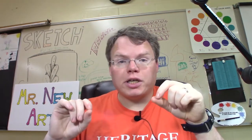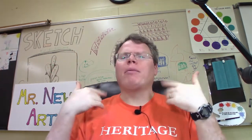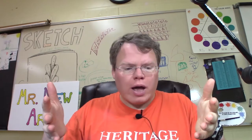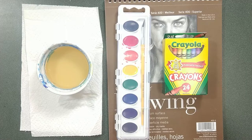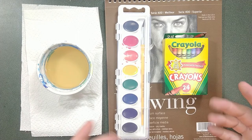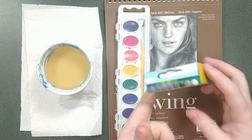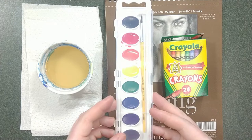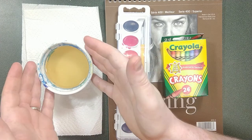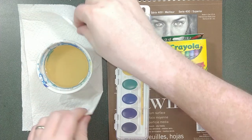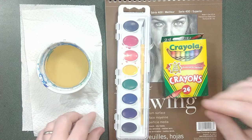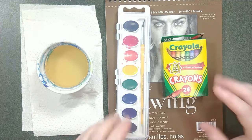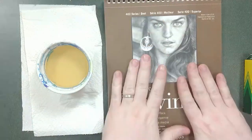You might have looked at those pictures and thought, 'How am I supposed to do that?' I'm about to show you how we paint that. Here are the materials we're going to need: crayons — specifically the black crayon — watercolor paints, a cup of water, a paper towel to dry things off, and some kind of paper.